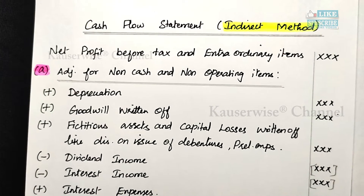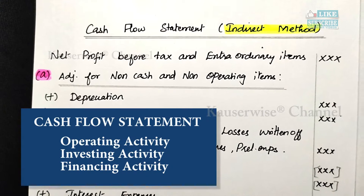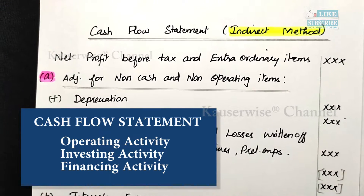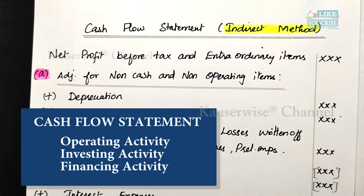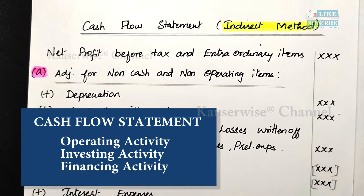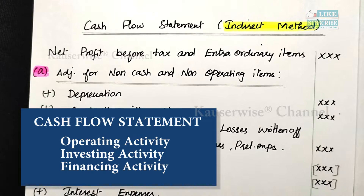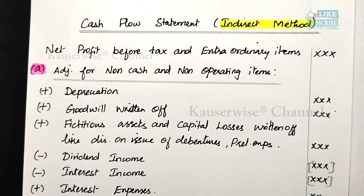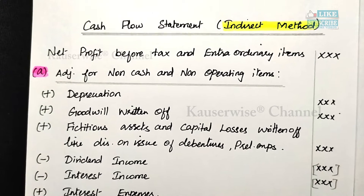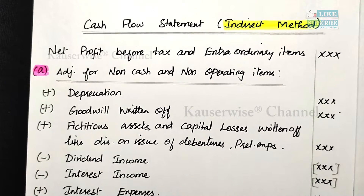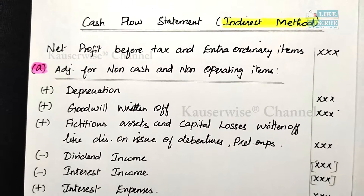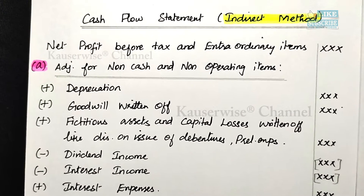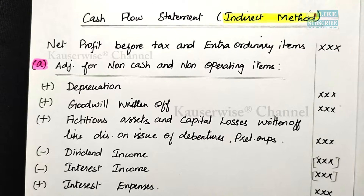In cash flow statement, we have three major components. Number one: net cash flow from operating activities. Number two: net cash flow from investing activities. Number three: net cash flow from financing activities. For the first component — cash flow from operating activities — you have to do three major adjustments.